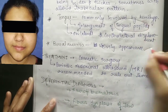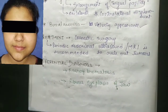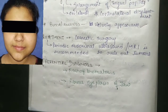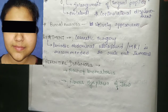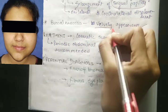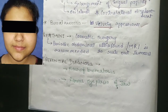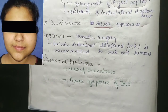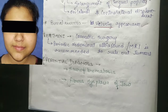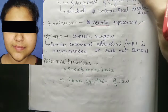In the buccal mucosa, there will be a velvety appearance — this is an important point. If asked about the appearance of buccal mucosa in facial hemihypertrophy, the answer is velvety appearance. Regarding treatment, cosmetic surgery is performed, and abdominal ultrasound or MRI is recommended to rule out tumour development.